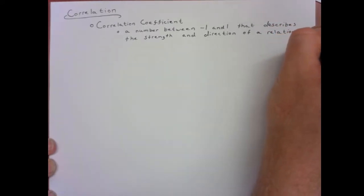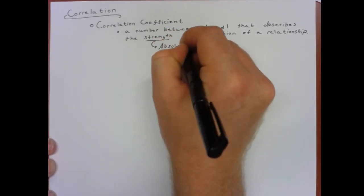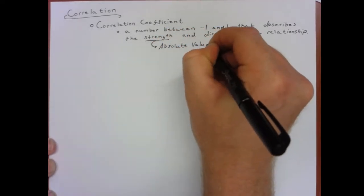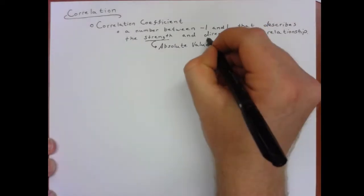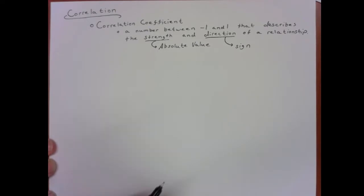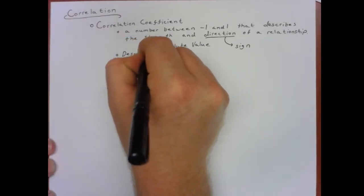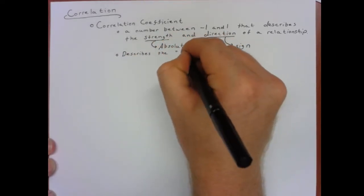If a relationship is very strong, then x and y tend to move together. This is indicated by the absolute value of the correlation coefficient, so how far it is from 0. The further from 0, the stronger it is, and the direction is indicated by the sign - is it a positive number or a negative number indicating a positive or negative relationship?